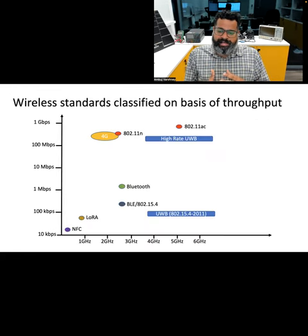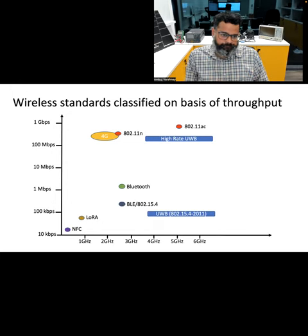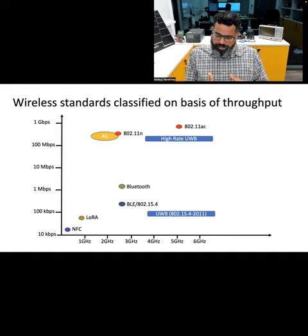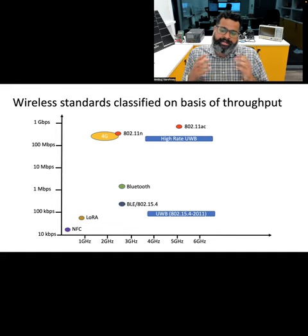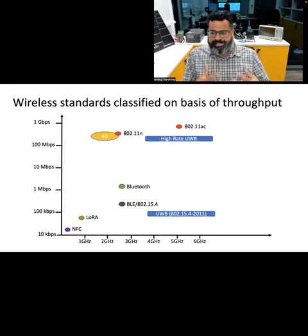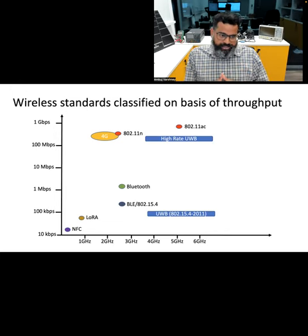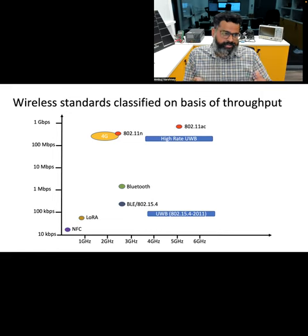Let's begin by examining frequency and data rate. Technologies such as Wi-Fi and 4G offer high bit rates and operate at frequencies of several gigahertz. On the other hand, typical IoT communication standards support lower data rates — most IoT and sensor applications only transmit small amounts of data, usually on the order of a few kilobits to tens of kilobits per second.